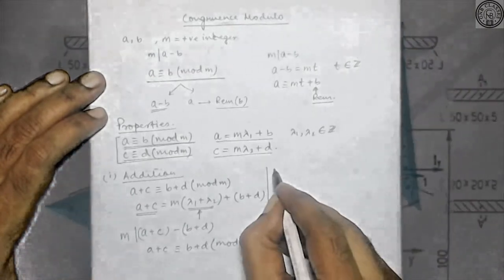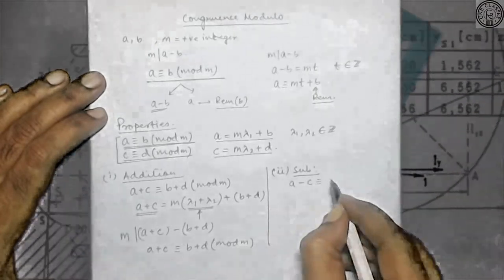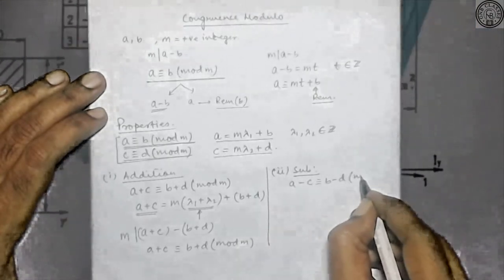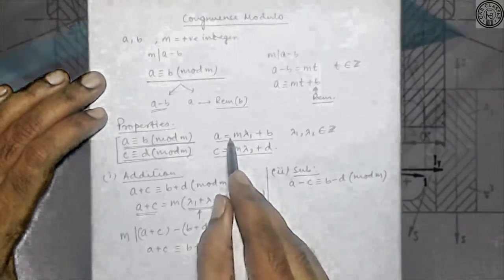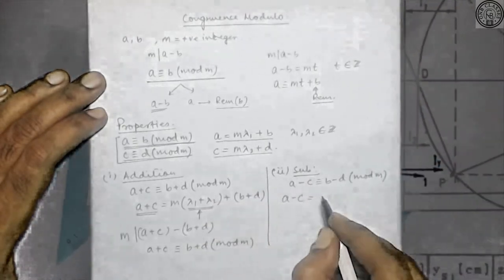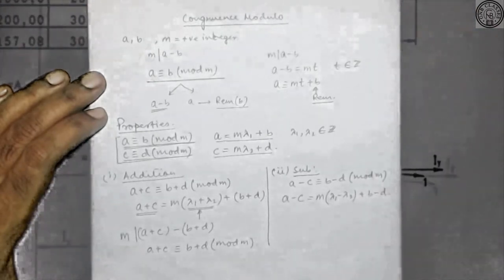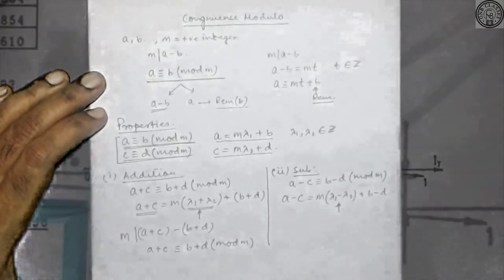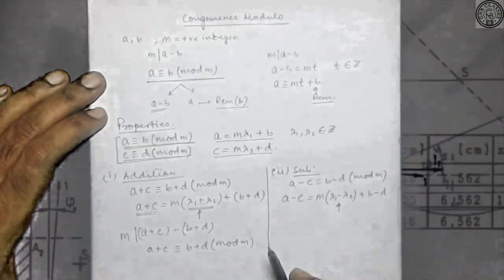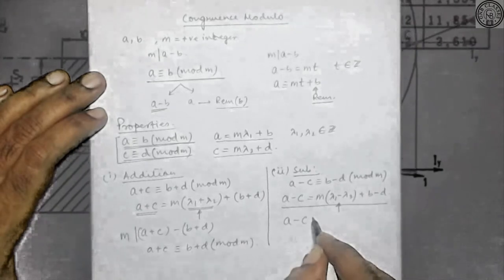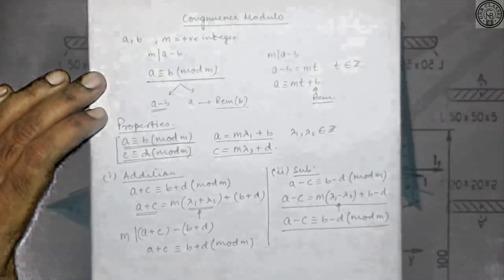The subtraction property states that a minus c is congruent to b minus d modulo m. We subtract the second equation from the first: a minus c equals m(λ₁ minus λ₂) plus (b minus d). Since λ₁ minus λ₂ is an integer, we can say that a minus c is congruent to b minus d modulo m according to the definition.